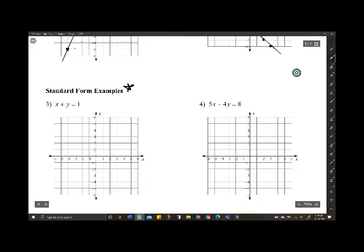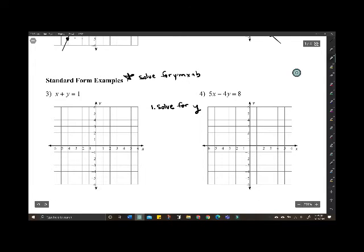Standard form examples. Standard form, you want to solve for y equals mx plus b. That's what you need to do first. Step one, solve for y. Then, you're going to plot your b. And then, you can use your slope.